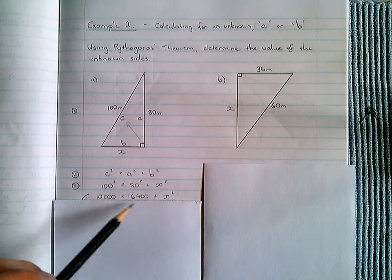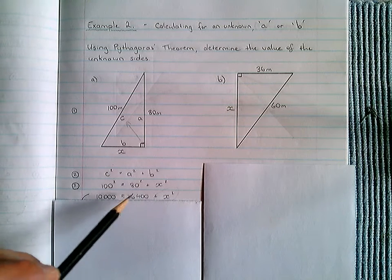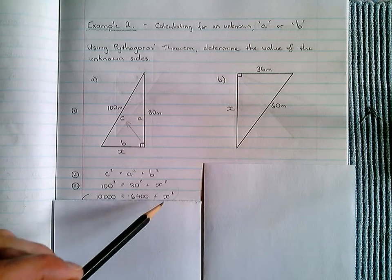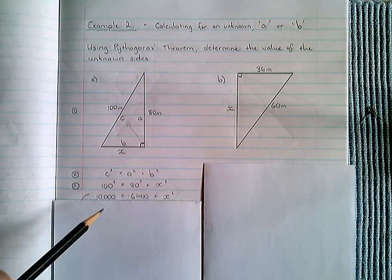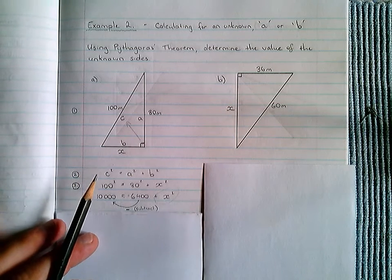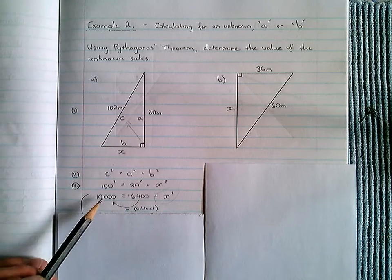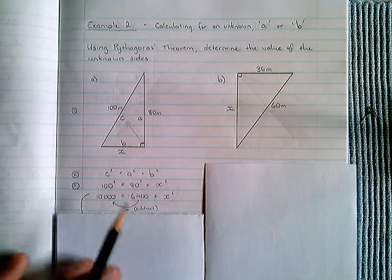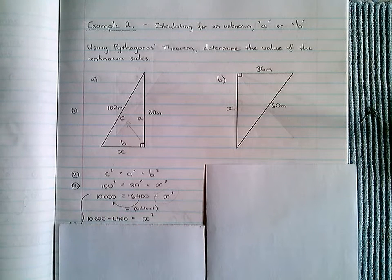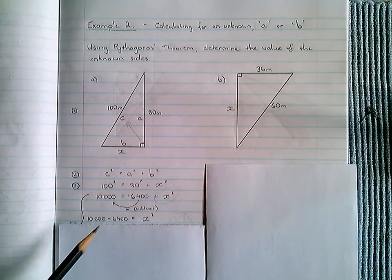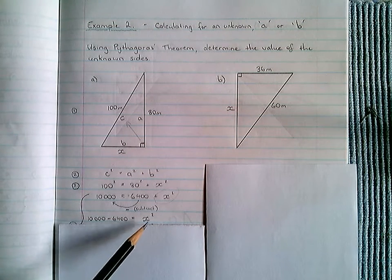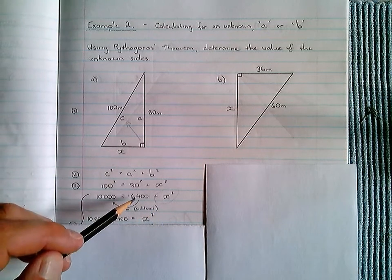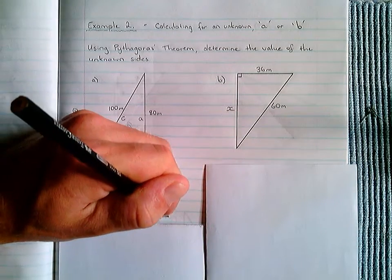So, to get X squared by itself, we're going to take 6400 from this side, which would leave us with 0, and therefore just X squared on the right-hand side. But if we do that to the right-hand side, we also need to do it to the left-hand side. So, what we're doing is we're going to also subtract 6400 from this 10,000. And this is what we get. 10,000 take the 6400 is going to be equal to that X squared, which we now have by itself, because as we said, 6400 take 6400 equals 0.